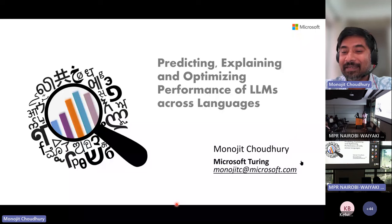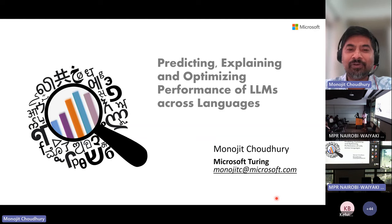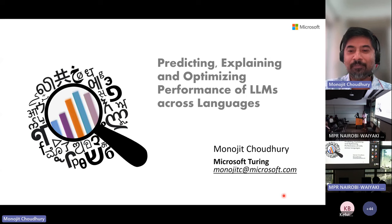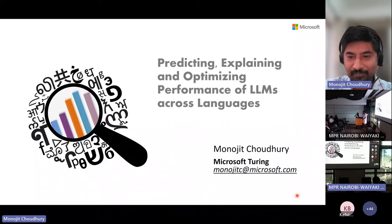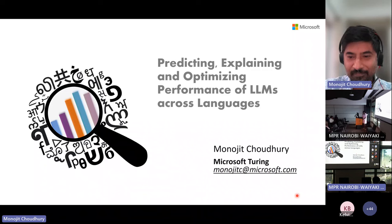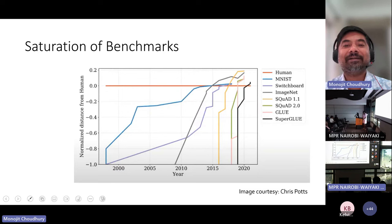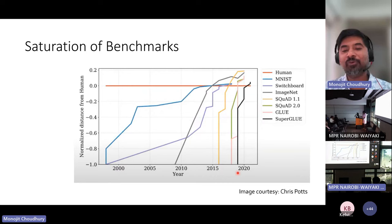What I'm going to talk about is how we can scale up large language models across languages. I'll start with what are the problems, then try to explain why performances are unequal across languages, and what we can do to help improve the performance in languages which are under-resourced. As Jackie said, large language models are taking us by storm. I like this particular graph from Chris Potts showing benchmarks and how accuracy in those datasets has improved over the years.